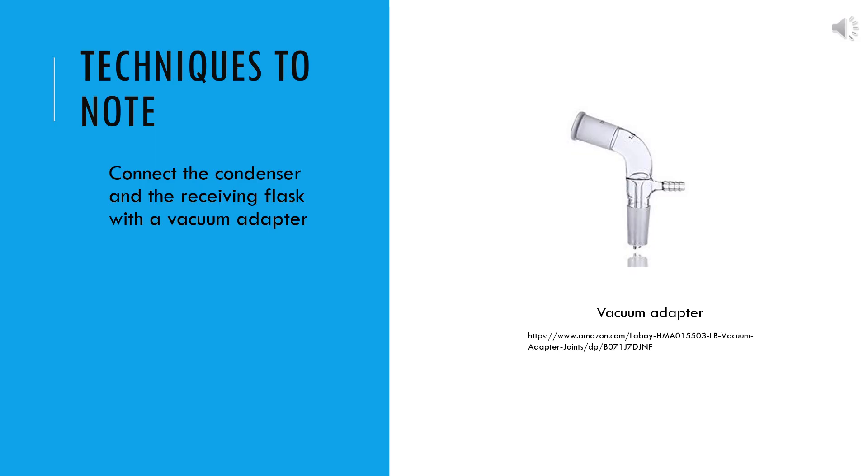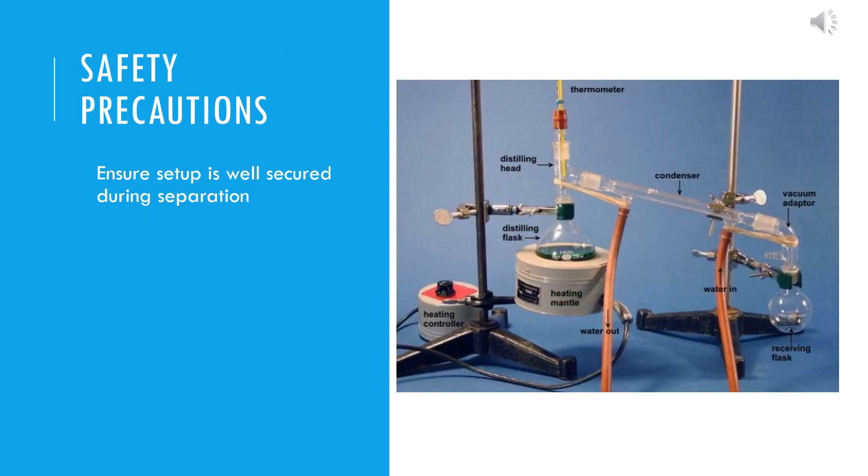A vacuum adapter is used as a connector between the condenser and the receiving flask. As a safety precaution, ensure all apparatus in the setup is firmly secured.